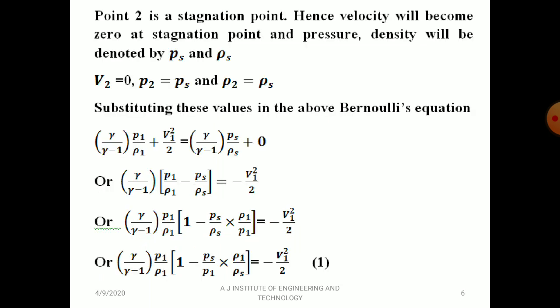Point two is the stagnation point, where the resultant velocity is zero. So V2 = 0, P2 = Ps (stagnation pressure), and ρ2 = ρs (stagnation density).